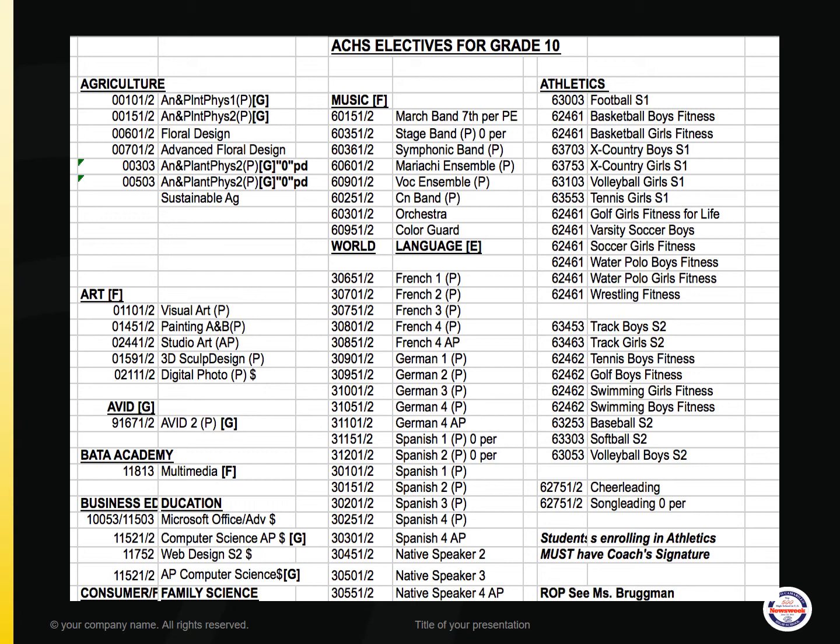Under World Language, you can see all selections for the different languages: French 1, 2, 3, 4, and 4 AP; German 1 through 4 AP; Spanish 1 through 4 AP and Spanish native speaker. There is also an offering of Spanish 1 and 2 Zero Period. Priority for Zero Period Spanish 1 and 2 would be given to students enrolled in AVID, the BADA Business Academy, and/or the Ag Science Pathway.